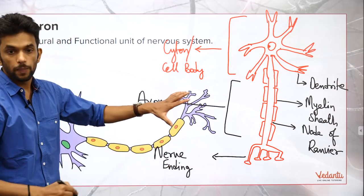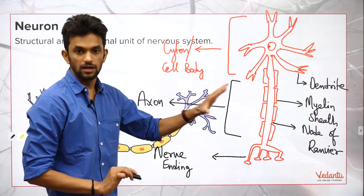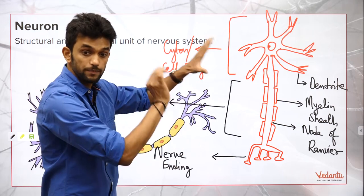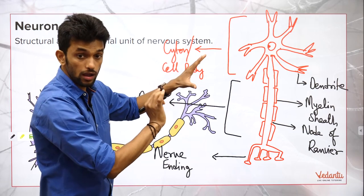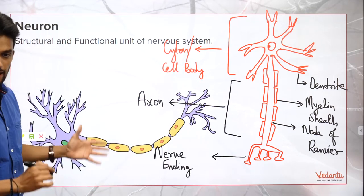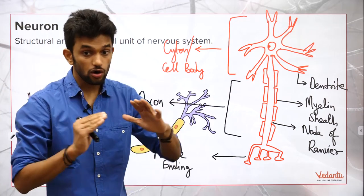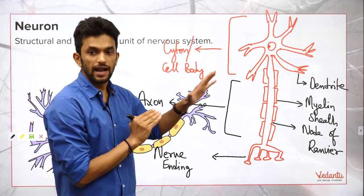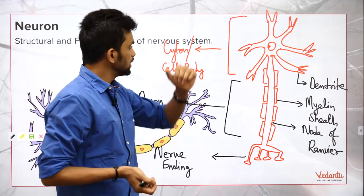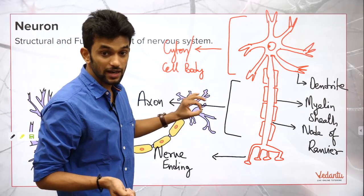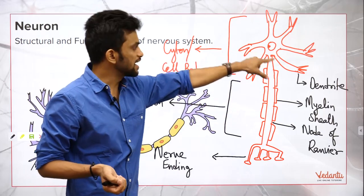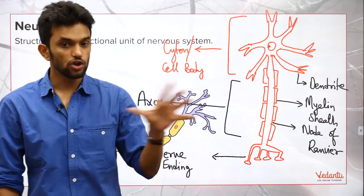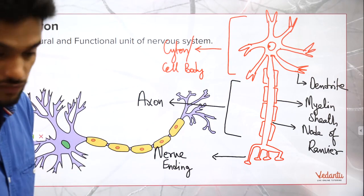This is how our neuron looks like. I know it's a simple diagram, but this would fetch you some marks. The most important point is to label them correctly — cytone or cell body, dendrite, axon, and nerve endings should all be properly marked. Now let me show you an animation of this.